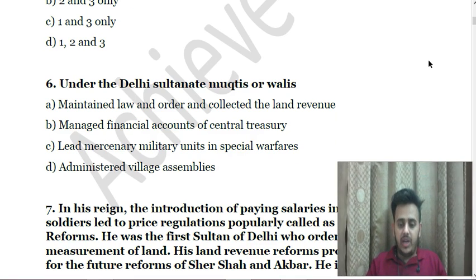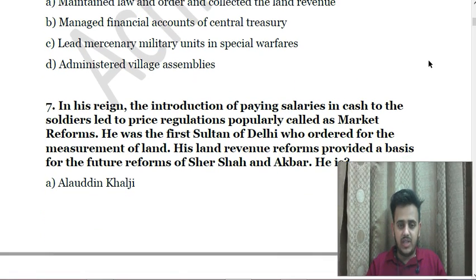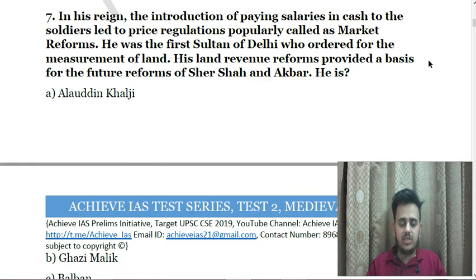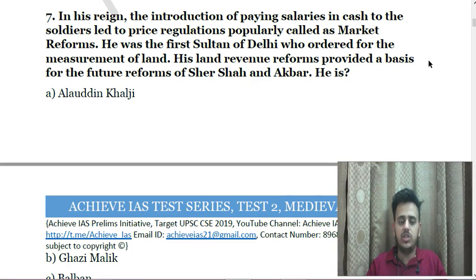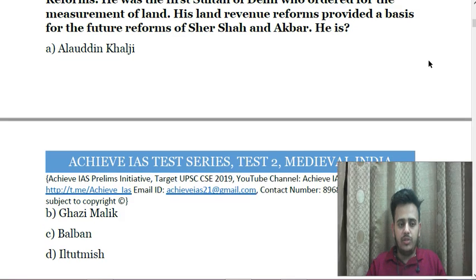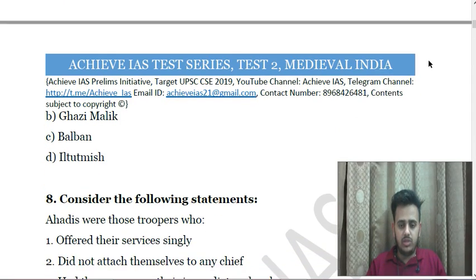Next: Under the Delhi Sultanate, Muktis or Walis were — A. Maintained law and order and collected land revenue, B. Managed financial accounts and central treasury, C. Led mercenary military units and special warfare, D. Administered village assemblies. Next: In his reign, the introduction of paying salaries in cash to soldiers led to price regulations, popularly called market reforms. He was the first sultan of Delhi who ordered measurement of land, and his land revenue reforms provided a basis for future reforms of Sher Shah and Akbar. He is — A. Alauddin Khilji, B. Ghazi Malik, C. Balban, D. Iltutmish.